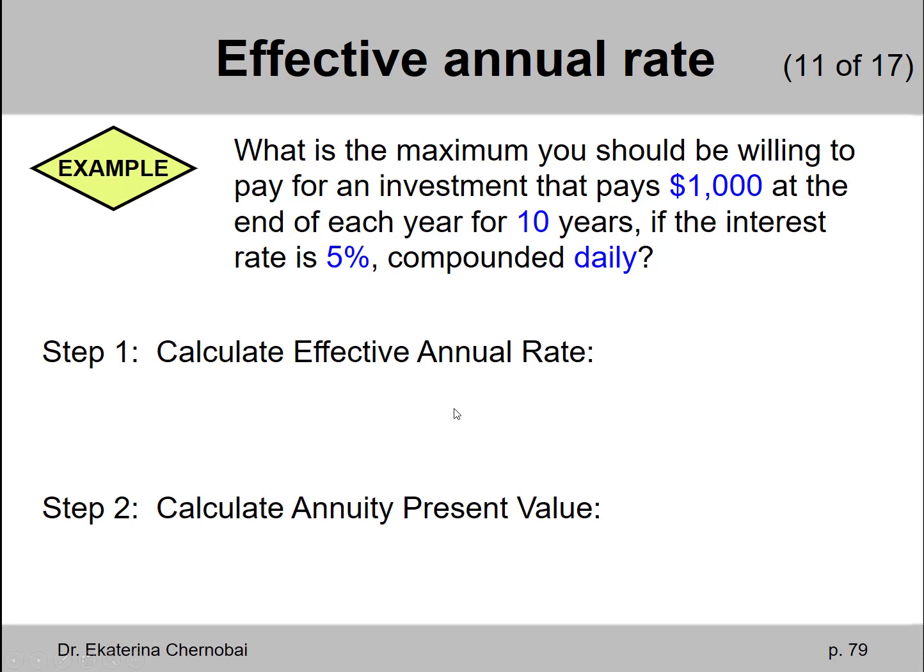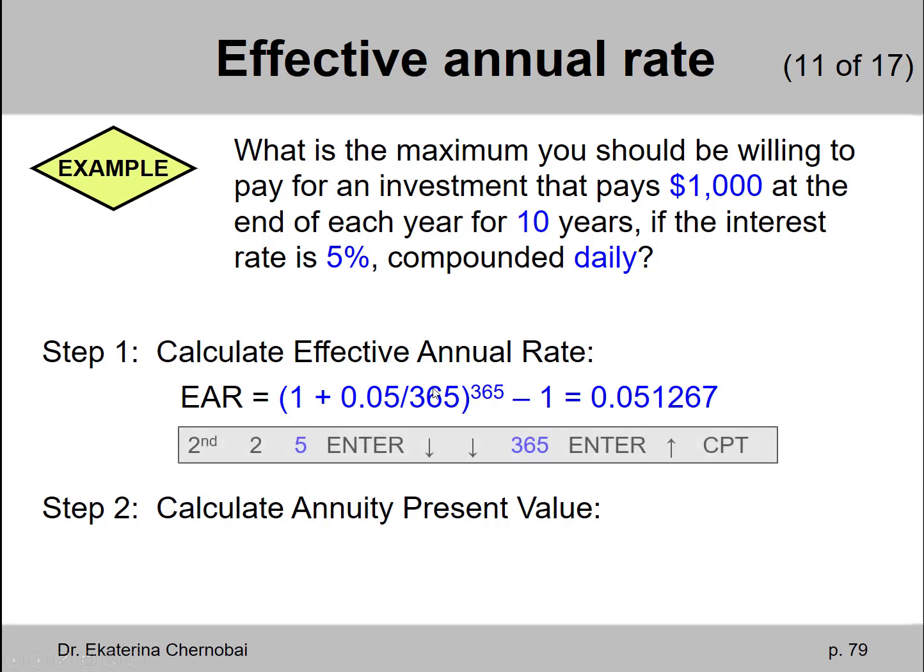How much? Step 1, calculate effective annual rate using 365 for your compounding frequency. Of course you can use the financial calculator where the nominal rate is 5, compounding per year is 365 and you're computing the effective rate.